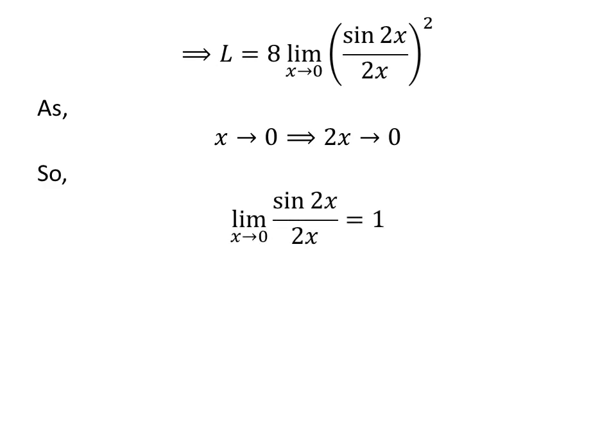As x approaches 0, 2 times x approaches 0. So, the limit of sin of 2 times x upon 2 times x as x approaches 0 is equal to 1. Application of the above fact implies the limit L is equal to 8.